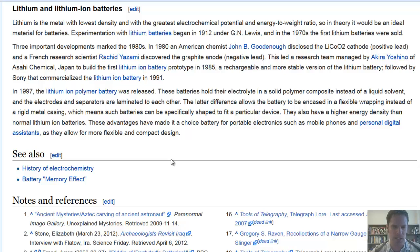In 1997, the lithium ion polymer battery was released. These batteries hold their electrolyte in a solid polymer composite instead of a liquid solvent, and the electrodes and separators are laminated to each other. The latter difference allows the battery to be encased in a flexible wrapping instead of a rigid metal casing, which means such batteries can be specifically shaped to fit a particular device. They also have a higher energy density than normal lithium ion batteries. These advantages have made it a choice battery for portable electronics such as mobile phones and personal digital assistants, or PDAs, as they allow for more flexible and compact design. I read this only because I remember in the 1990s, and you may have seen this as well, that cell phones used to look like big old bricks. Cell phones, iPods, iPads, they're all tiny now. And what marked the ability of technology to allow them to become so small? Well, in large part, it was this development of the lithium ion battery.